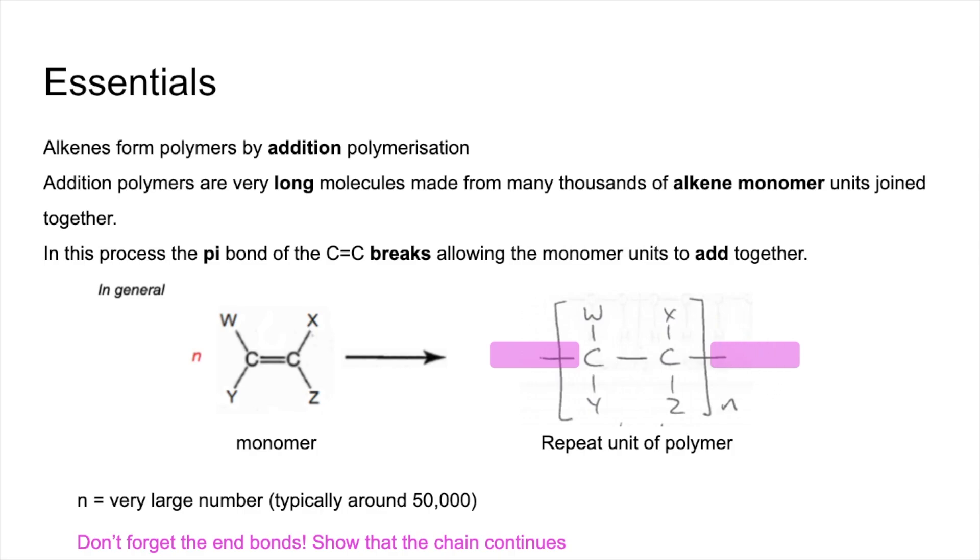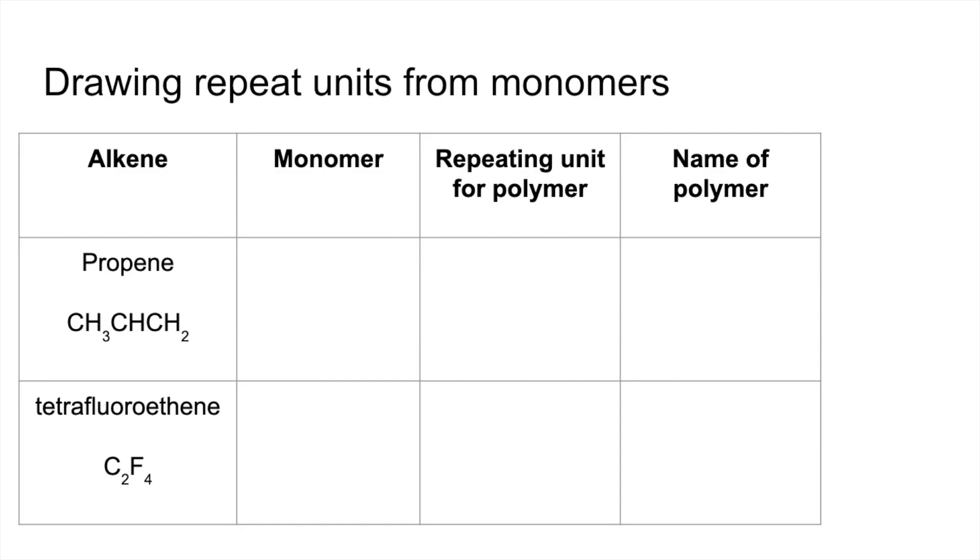For the next part of the video, we're going to look at typical things that you would get asked to do. The first one is to draw repeat units from monomers. You'll notice there down the left hand side we've got two monomers, two alkenes.